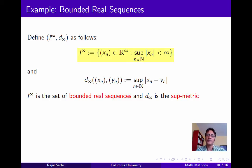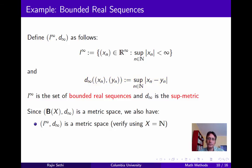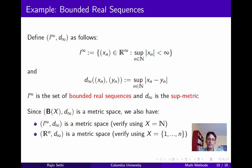Next consider the set of bounded real sequences — sequences of real numbers where the terms form a bounded set. We can apply the sup metric again, where the distance between two sequences xn and yn is the supremum of the set of point-by-point distances. To verify this is a metric, recall that a sequence can be viewed as a function from the set of natural numbers to the real numbers, so a bounded real sequence is a special case of a bounded real function. Our earlier result immediately implies that d-infinity is a metric for bounded real sequences. We can also view any point in Rn as a function with domain being the first n natural numbers, which implies the sup metric is also a metric for Rn.